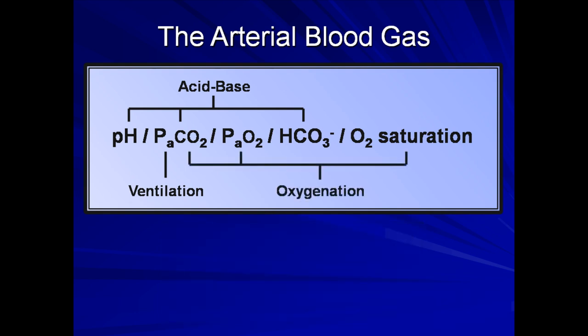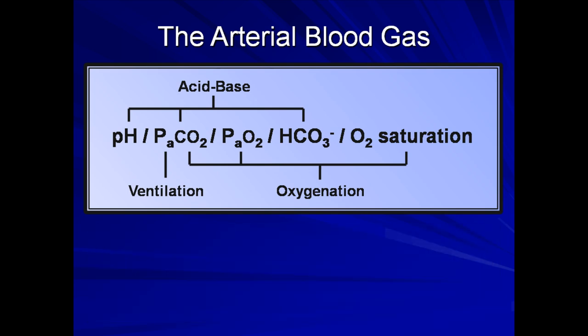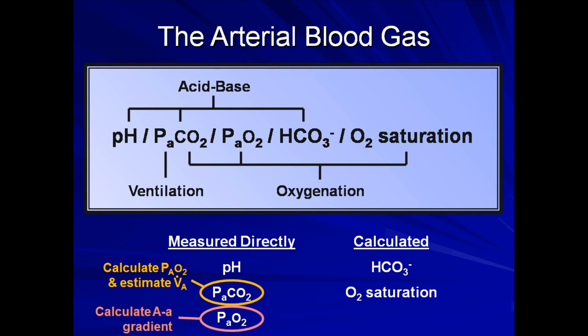Finally, the PaCO2, PaO2, and O2 saturation tell us about the patient's oxygenation. The alveolar gas equation from lecture 4 allows one to calculate alveolar oxygen tension from PaCO2, and the alveolar-to-arterial oxygen gradient provides important information about the adequacy of the patient's alveolar-arterial membrane. The big three — pH, PaCO2, and PaO2 — are all measured directly, while the bicarb is calculated using the Henderson-Hasselbalch equation, and O2 saturation is calculated using a nomogram relating PaO2 and temperature. PaCO2 is used to calculate alveolar O2 and to estimate alveolar ventilation, and the PAO2 is used to calculate the A-a gradient.